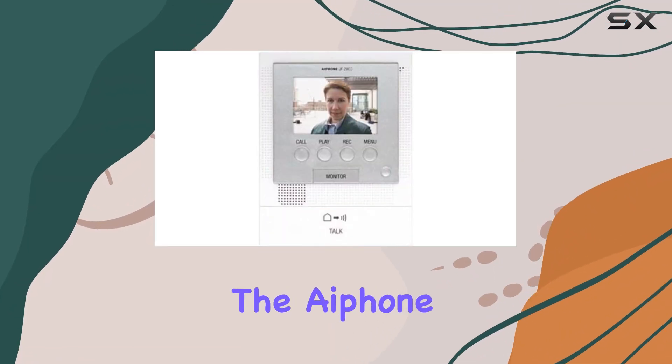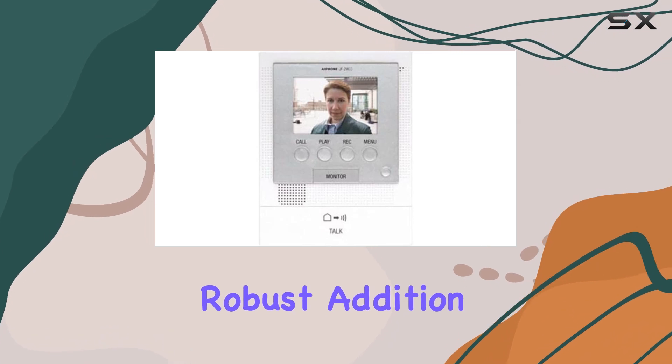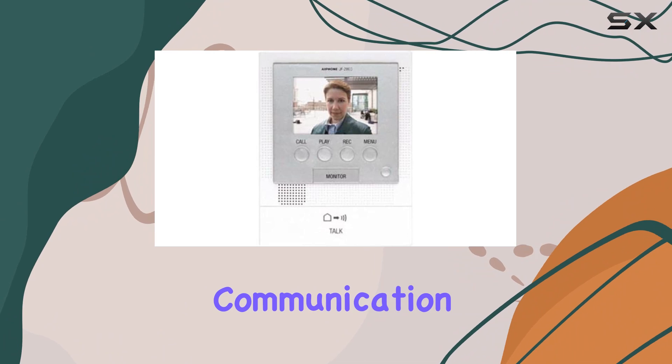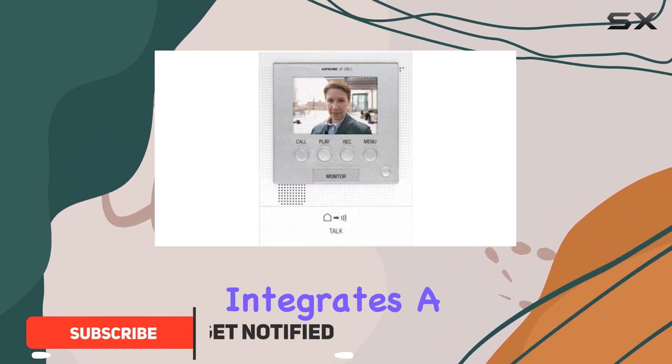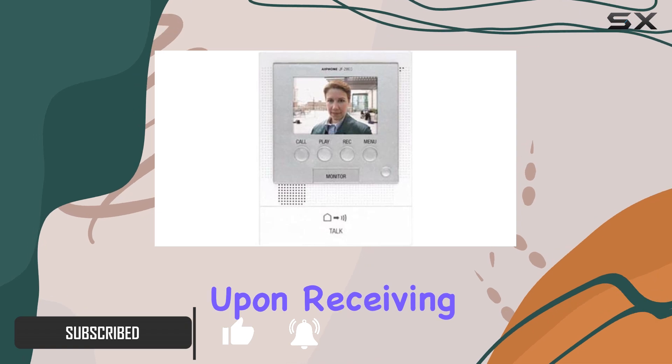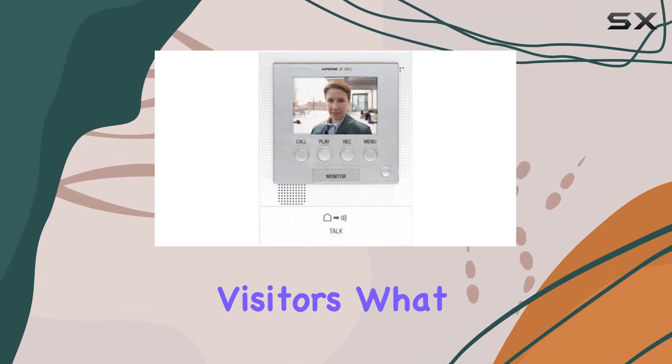Today, we're diving into the iPone JF 2MED video door phone, a robust addition to your home security arsenal. Designed to facilitate seamless communication and control, this device integrates a 3.5-inch LCD color monitor that activates upon receiving a call from the door station, ensuring you can easily identify visitors.